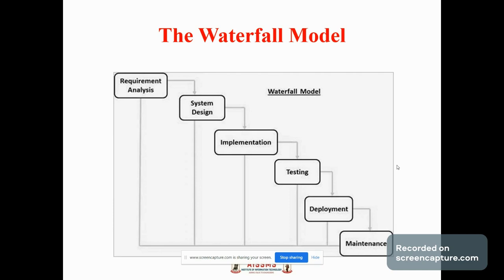The next phase is deployment. The team builds and installs the application on the servers procured for the application. They also coordinate with network, IT, and administrative teams to finally get the application up. One more phase is maintenance. During the maintenance phase, the team ensures that the application is running smoothly on the servers without any downtime. This is all about the waterfall model.